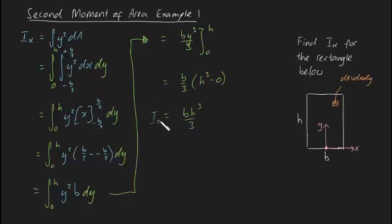This is the area moment of inertia about the x-axis for a rectangle of height h and base b, with the x-axis lying along the base. Notice that if the axis was at the centroid, we would get a different answer because the limits would be different. I hope that made sense, cheers.